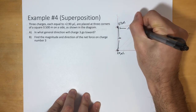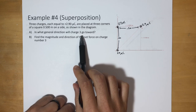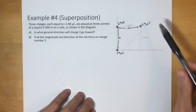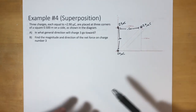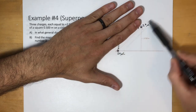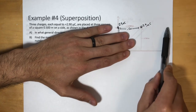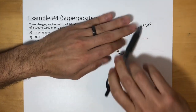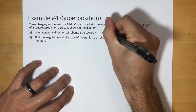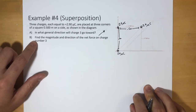Over here to over here is 0.5 meters. Now, what we want to do is find what general direction charge three will go. This is charge one, charge two, and charge three. Charge one pushes charge three upward, and charge two pushes charge three to the right, so the general direction is northeast — somewhere in that direction. Part b says: find the magnitude and direction of the net force on the charge.